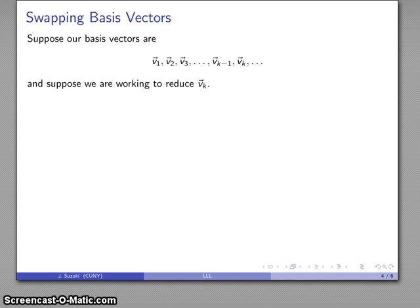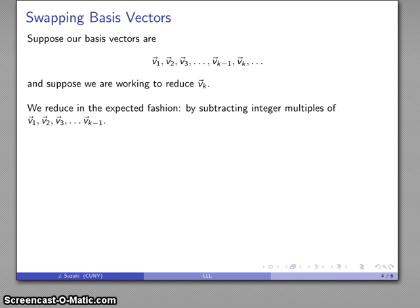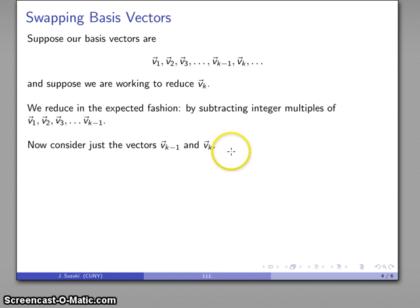Here's the issue. We have a bunch of basis vectors and we are working to reduce vector v_k. We have our first few provisional basis vectors, and we want to reduce v_k by subtracting integer multiples of the previous basis vectors from our working vector. At the end of that process, we consider the last two vectors: v_k — our current working vector after subtracting integer multiples — and v_{k-1}, our most recently added basis vector.